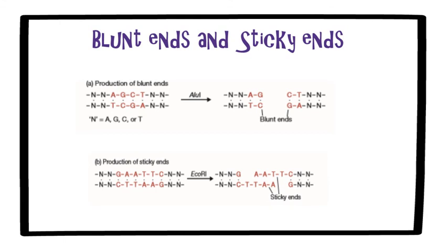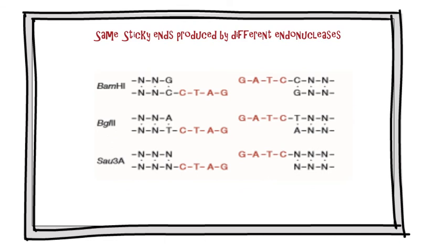These are called sticky or cohesive ends, as base pairing between them can stick the DNA molecules together. One important feature of sticky end enzymes is that restriction enzymes with different recognition sequences may produce the same sticky ends. BamHI and Bgl2 are examples. Both produce GATC sticky ends. Same sticky ends are also produced by Sau3A, which recognizes only the tetranucleotide GATC. DNA fragments produced by digestion with either of these enzymes can be joined to each other, as each fragment carries a complementary sticky end.